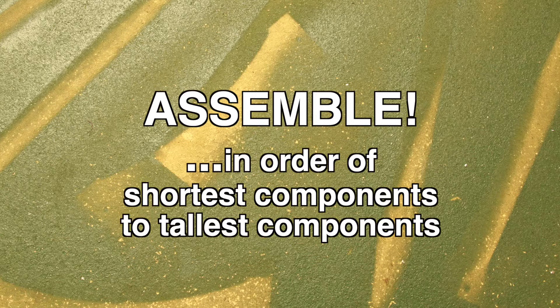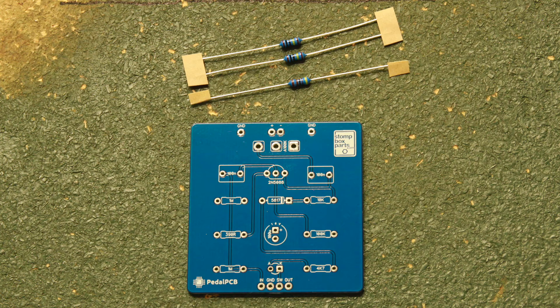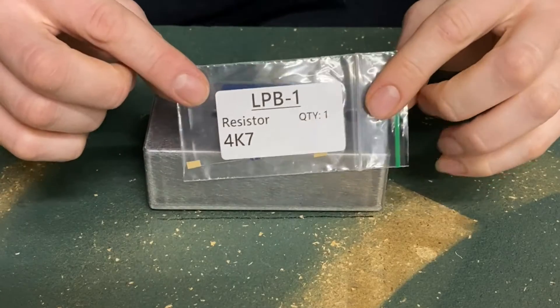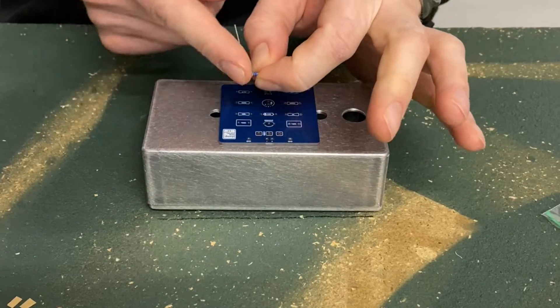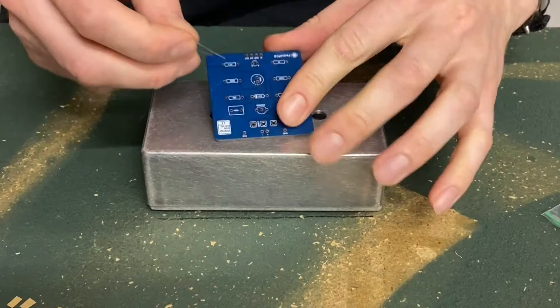Let's start soldering. We're going to assemble this PCB in order of shortest components to tallest components. So we will start with resistors. Resistors look like this and will go into their corresponding spots circled here. Take your 4.7K resistor. Bend the legs close to the body and insert into the spot labeled 4K7 on the PCB.